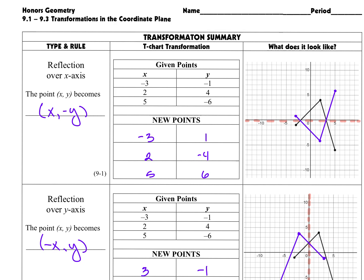We're gonna have several types of transformations. The first ones we're going to look at are reflections. Our first rule will be a reflection over the x-axis. On your graph right now you only have this black graph. If we are going to reflect over the x-axis, draw in this horizontal line to indicate what we're going to reflect over. The rule is: the x value, whatever x value you're given, is going to stay the same.